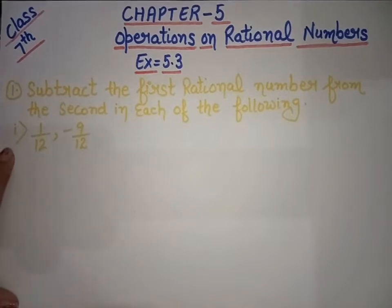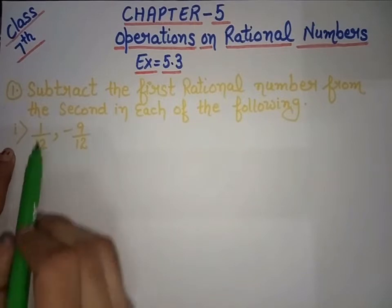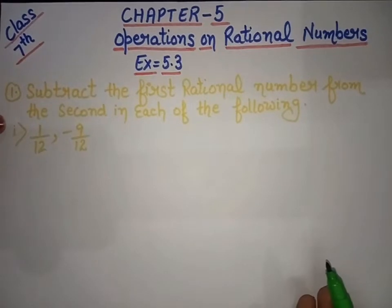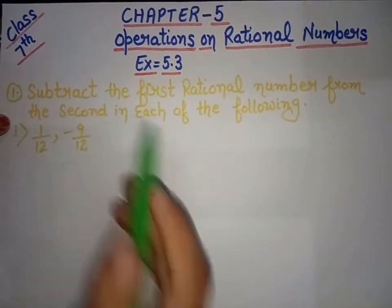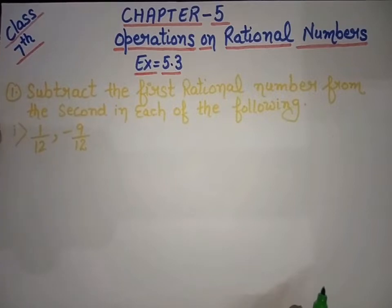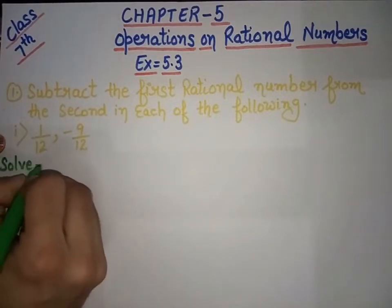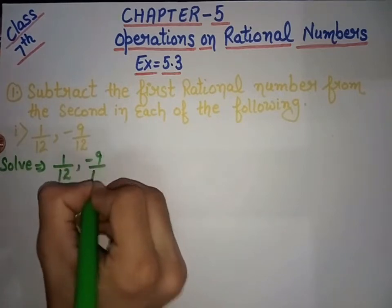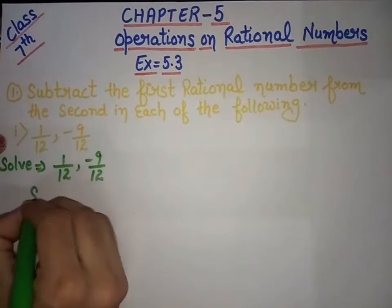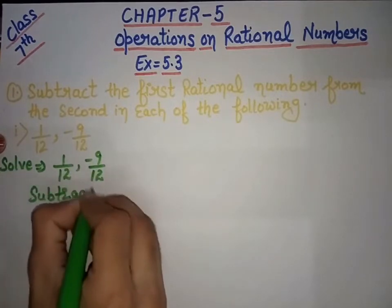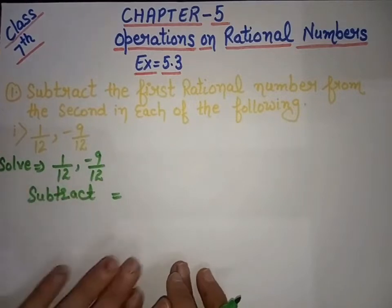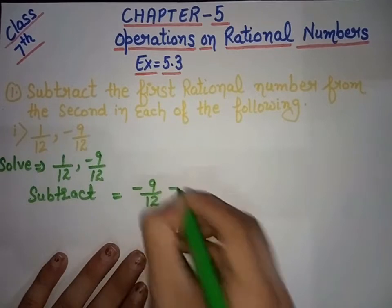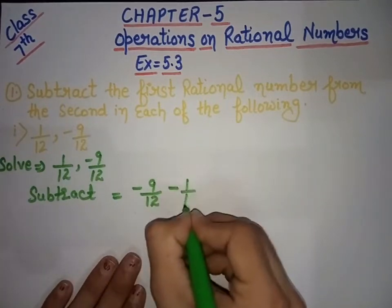The equations given below are: 1 over 12, minus 9 over 12. The question says we have to subtract the first rational number from the second. So we will solve it. First, we have 1 over 12 and 9 over 12. We have to subtract from the second one, minus the first: minus 9 over 12, minus 1 over 12.